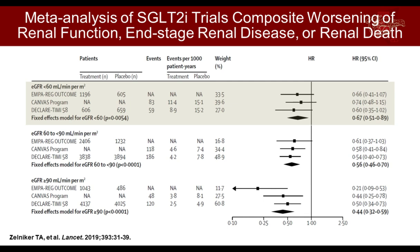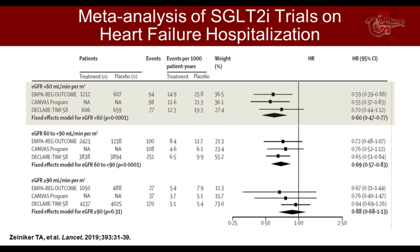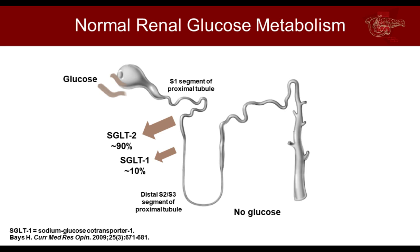Looking at renal function and end-stage renal disease, we can see how SGLT2 inhibitors perform at different eGFR levels. Even at an eGFR of less than 60, there is benefit to an SGLT2 inhibitor. Heart failure is a big one — so many people with type 2 diabetes have heart failure; it's one of the biggest causes of hospitalization and death. Now we have a drug that can really tackle it, reducing heart failure hospitalization and overall effects.